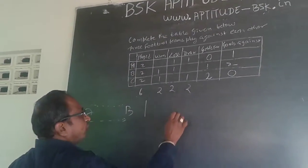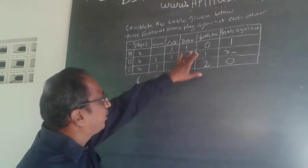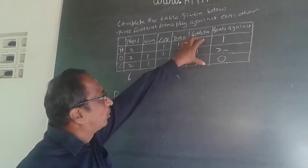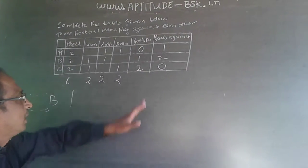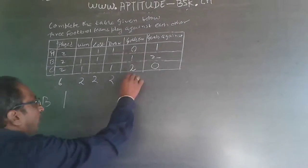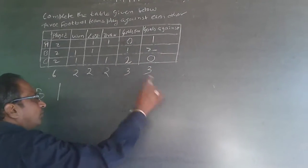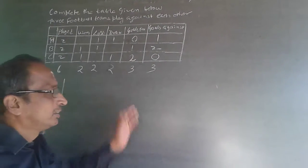Individually, the goals for and against might not be equal, but for the group as a whole, because one person's 'for' is another's 'against', the goals for and goals against will be equal.